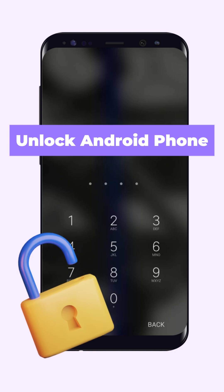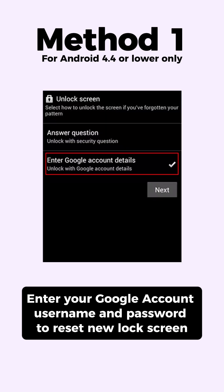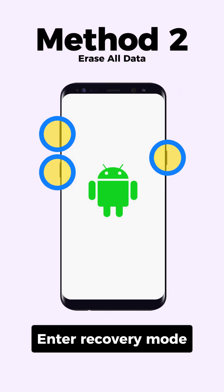We will show you how to unlock an Android phone. Method one: you can tap the Forgot Pattern option and enter your Google account to create a new lock screen. Method two: enter Android recovery mode.